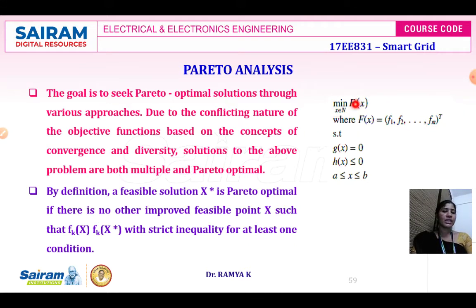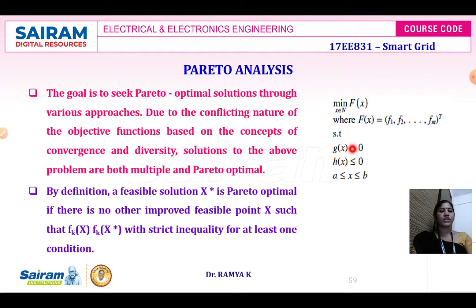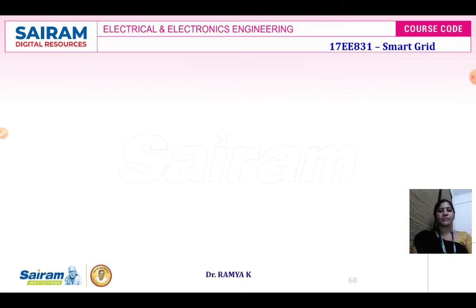The minimum function for the multi-objective problem is written as: minimize f(x) = [f1, f2, f3, ..., f1]^T, subject to g(x) = 0, h(x) ≤ 0, and x ranging from a to b.